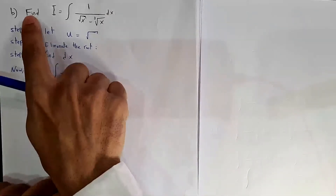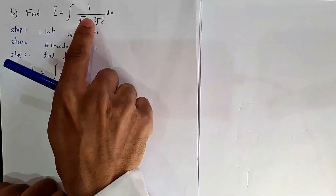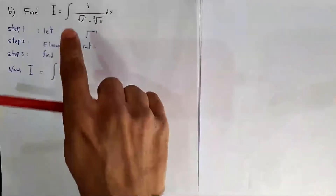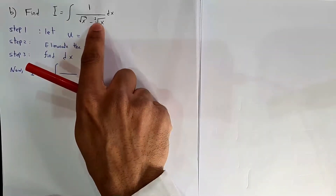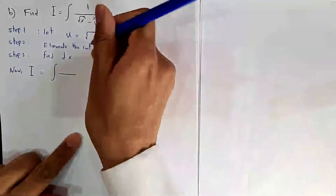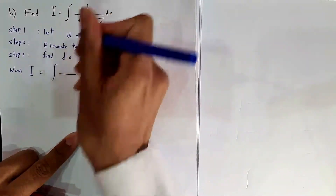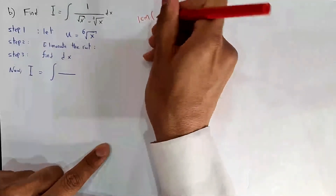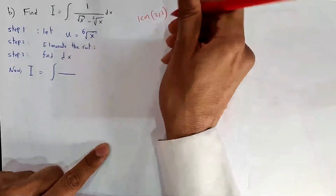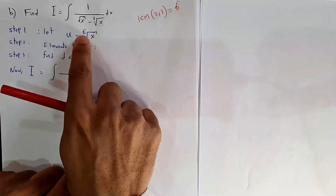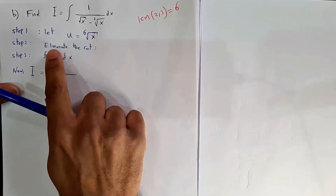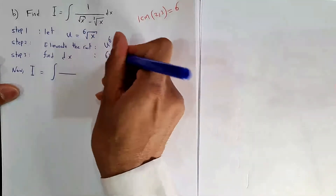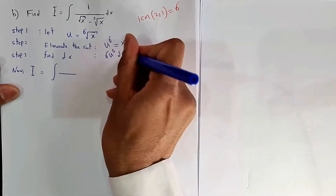Now part b: integrate 1 over (√x − ∛x) dx. Here we have a second root and a third root, so we need to combine them into one root. The LCM of 2 and 3 is 6, so we take u equal the sixth root of x. Eliminating the root: u⁶ = x, so dx = 6u⁵ du.